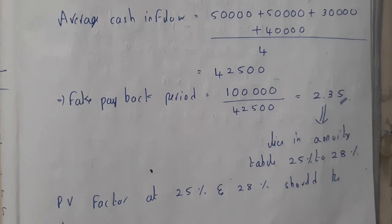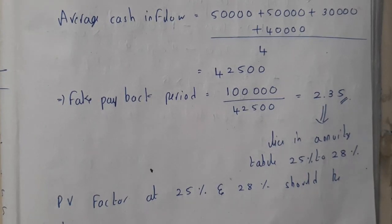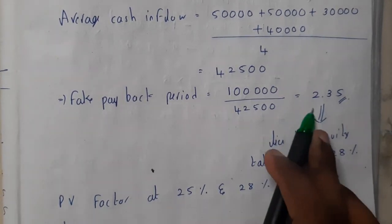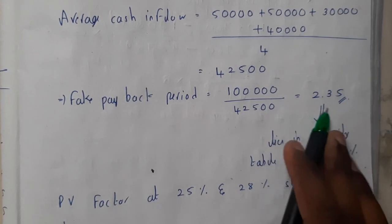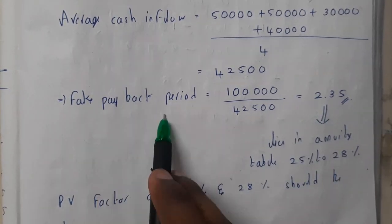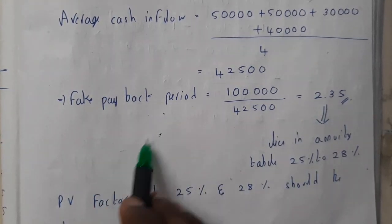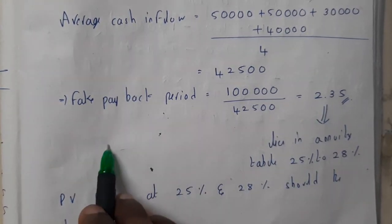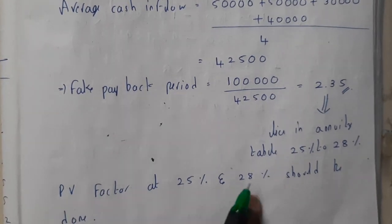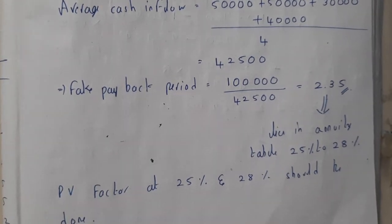The value 2.35 needs to be located in the annuity table. In this question, the annual table should be provided, and you check where 2.35 falls — it lies between 25% and 28%. So we need to calculate the PV ratio for both 25% and 28%.